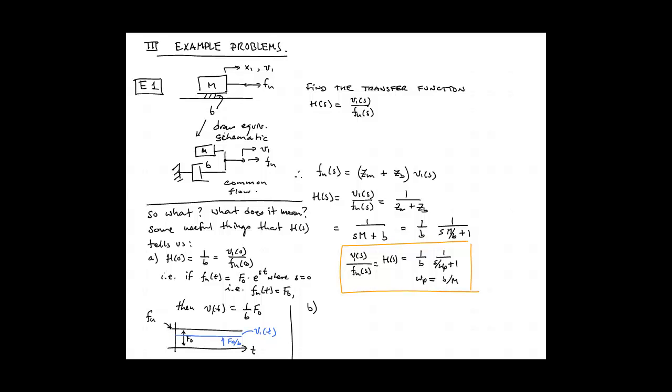And remember the transfer function scales the stimulant as it passes through the system and the response is that scaled value of the input. So in this case it's F0 over B. This makes a good bit of sense if you think about it, eventually the force exerted by the viscous damper will be equal and opposite to the current velocity that is being exerted by the external source, and thus there will be no remaining net force available to accelerate the mass any further.